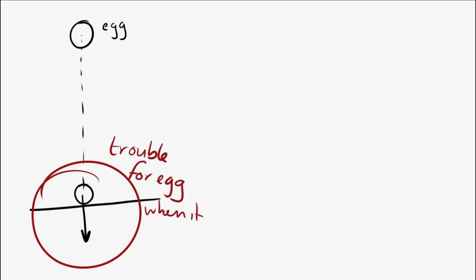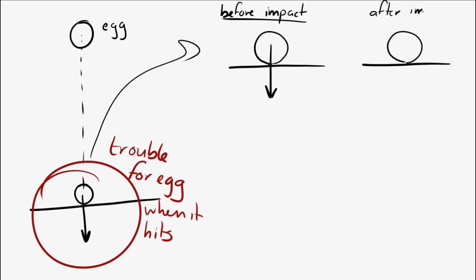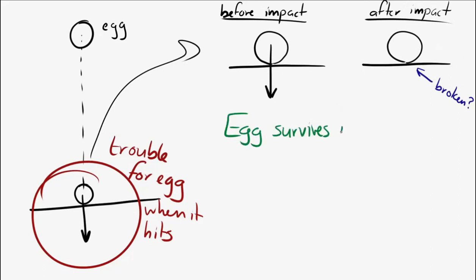Right before impact, the egg is moving downward, and right after impact it will be stationary — hopefully intact. The egg will survive if the force on it remains small. So our goal is to keep the net force on the egg as small as possible.